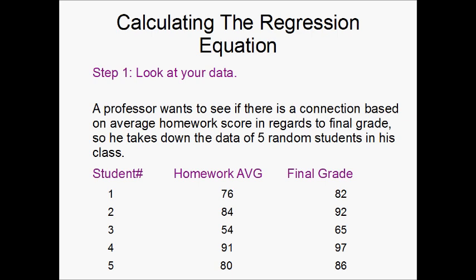So what you're going to have to do is you're going to have to take the data of five random students in this case. It could be more, it could be less. But in this case we're going to stick to five. Make it simple. Take down the data of five random students in your class. We have the homework average and we have the final grade.